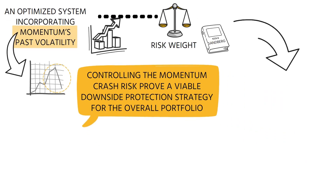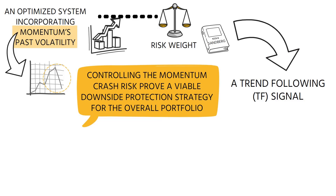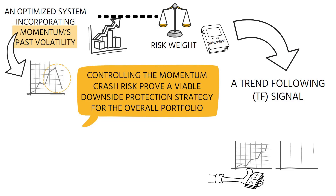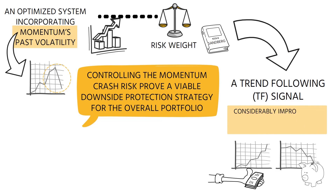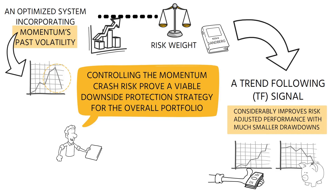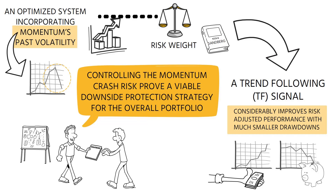On top of this, we add a trend-following signal for the risk weighting. It has been shown that staying invested in the stock market when it is trading above its moving average, and positioning defensively when it is below the moving average, considerably improves risk-adjusted performance with much smaller drawdowns. As we will demonstrate, our strategy has achieved greatly improved risk-adjusted performance in comparison to a buy-and-hold approach.